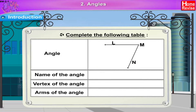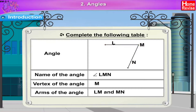Angle 2: Name of the angle is angle LMN. Vertex of the angle is M. Arms of the angle are LM and MN.